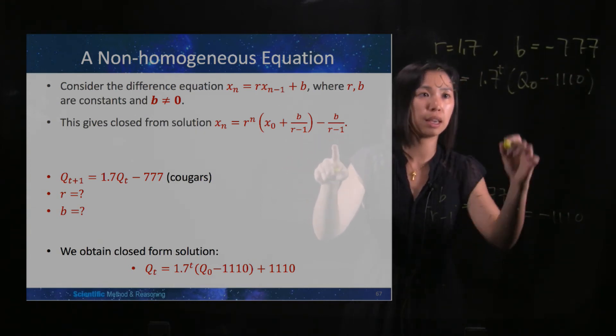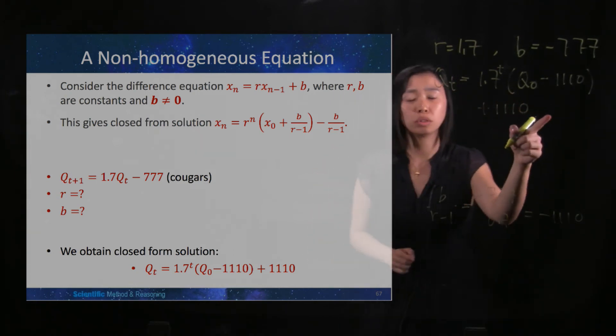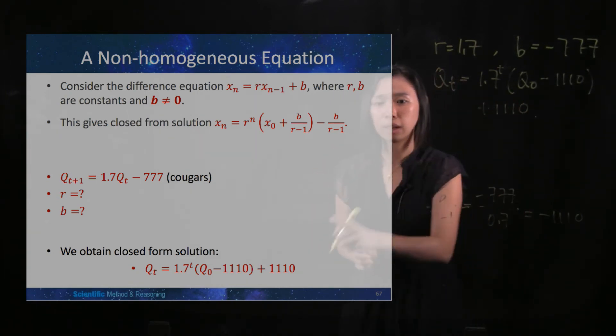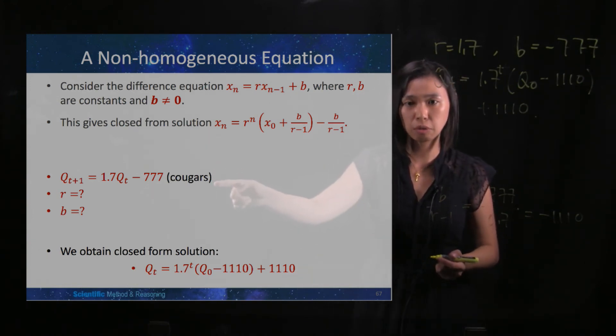And then you will minus this thing again, which means that you will add 1110. So this is the closed-form solution to this difference equation.